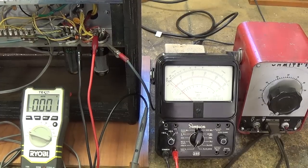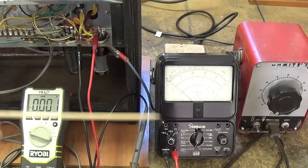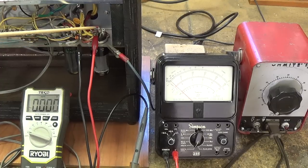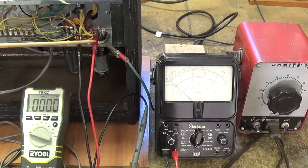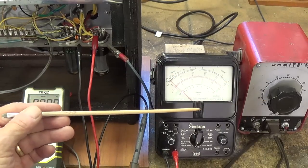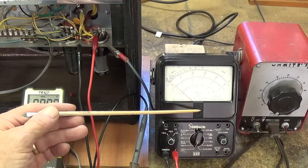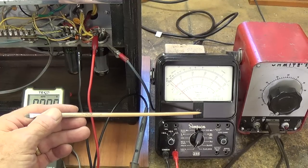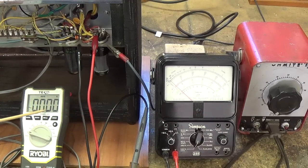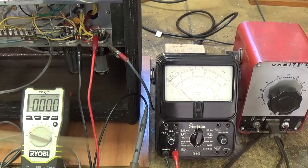I thought it might be interesting to actually set up an experiment here where we're going to measure the B plus being produced by the 5Y3 rectifier as I crank up the variac. Now over here it's going to show what the output is from the rectifier in direct current, and over here will be the alternating current that's being input to the rectifier.